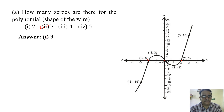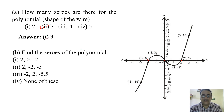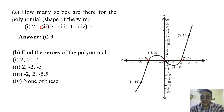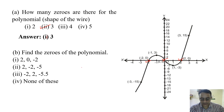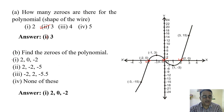Find the zeros of the polynomial. Where it intersected first is minus two, second is zero, and the next one is two. So the correct option is option A.